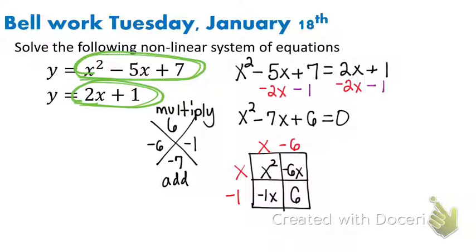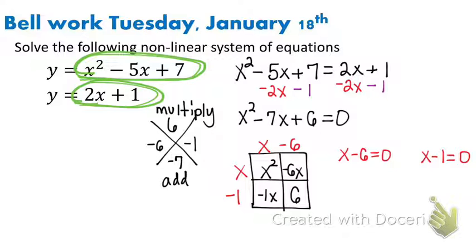So we have x minus six equals zero and x minus one equals zero. Go ahead and solve for x to get your two x values. This is an example of a parabola, so because our first equation is a parabola and the line is going to intersect it twice — because we can have two, one, or none intersections.